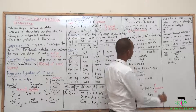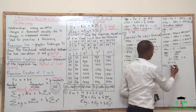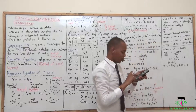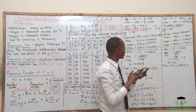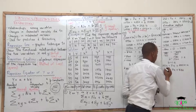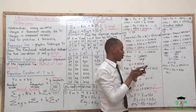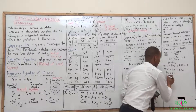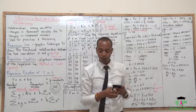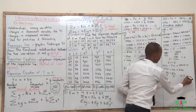Then we ask ourselves how we get A. We substitute the value of B back in. So 252 equals 7A plus 280 multiplied by 1.2. 280 times 1.2 gives us 336. So 7A plus 336 equals 252, therefore 7A equals 252 minus 336 which is negative 84. Dividing by 7, our A equals negative 12.